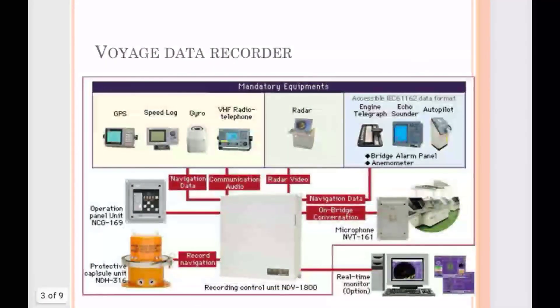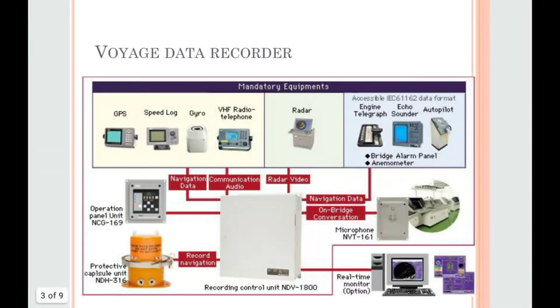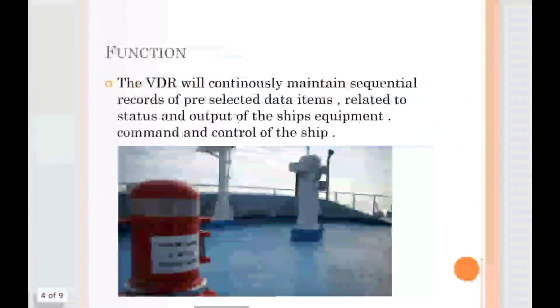The mandatory equipment of VDR includes: GPS, speed log, gyro, VHF radio telephone, radar, engine telegraph, echo sounder, and autopilot.